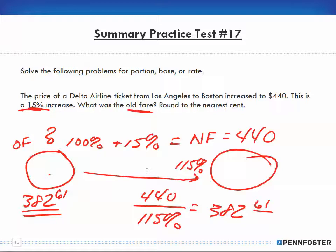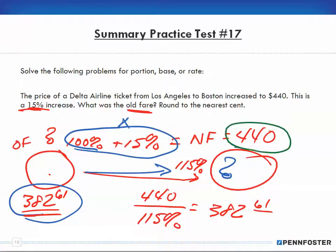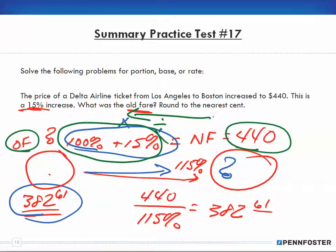As I explained in other videos: if you know the old amount and want to find the future amount, you multiply by the percentage. If you know the future amount and want to find the old amount, you divide by the percentage. I'm dividing here because I know the future amount — $440 — and want to find the base or old amount.